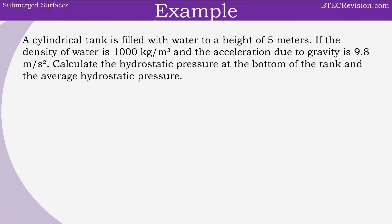Now let's look at an example. A cylindrical tank is filled with water to a height of five meters. If the density of water is 1000 kilograms per meter cubed and the acceleration due to gravity is 9.8 meters per second squared, calculate the hydrostatic pressure at the bottom of the tank and the average hydrostatic pressure. We start by writing: hydrostatic pressure equals rho gh. Plugging in these values, that's 1000 times 9.8 times the height of 5, which gives us a value of 49,000.